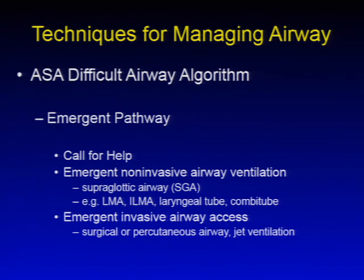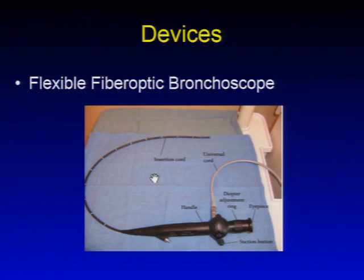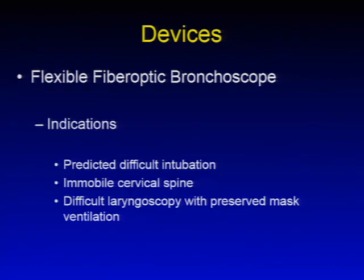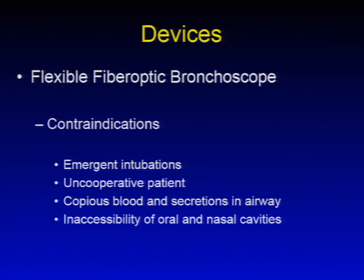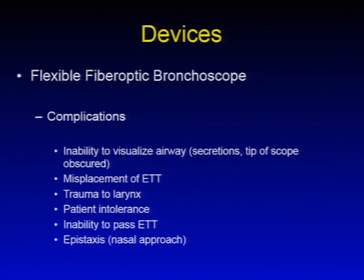Devices: flexible fiber optic bronchoscope. Indications include predicted difficult intubation, immobile cervical spine, and difficult laryngoscopy with preserved mask ventilation. Contraindications include emergent intubations — this is not a device for the emergent pathway — uncooperative patient, copious blood and secretions, or inaccessibility of oral and nasal cavities. Complications include inability to visualize the airway usually secondary to secretions, misplacement of the endotracheal tube, trauma to the larynx, patient intolerance, inability to pass the endotracheal tube, or epistaxis if using the nasal approach.